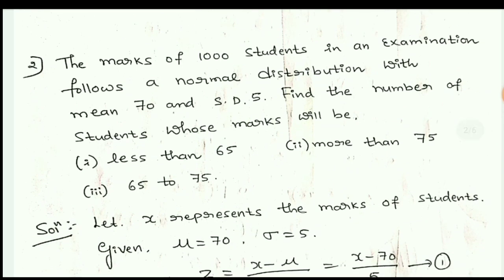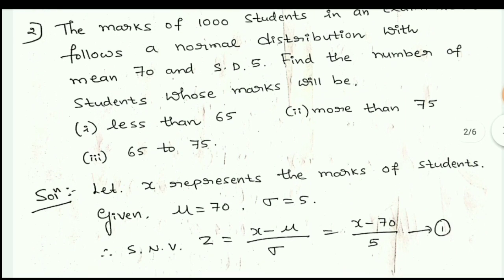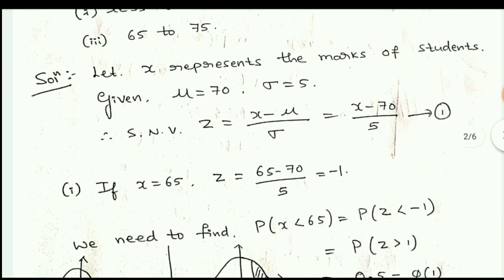Now let us take another example. The marks of 1000 students in an examination follow a normal distribution with mean 70 and standard deviation 5. Find the number of students — not the probability — whose marks are: (1) less than 65, (2) more than 75, and (3) between 65 and 75. Let x represent marks. Using z = (x − μ) / σ, substituting μ = 70 and σ = 5 gives z = (x − 70) / 5. Take this as equation 1.